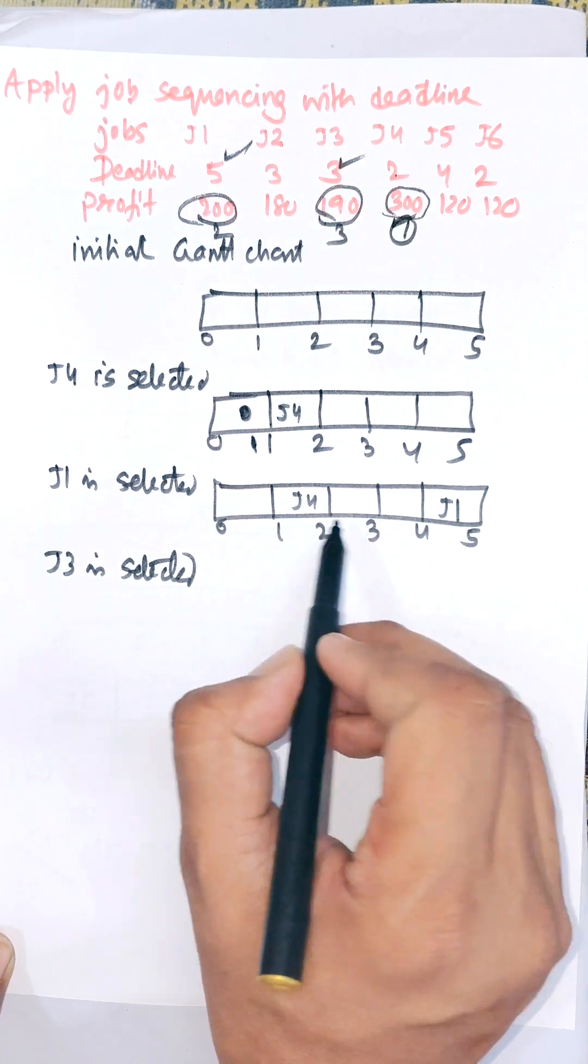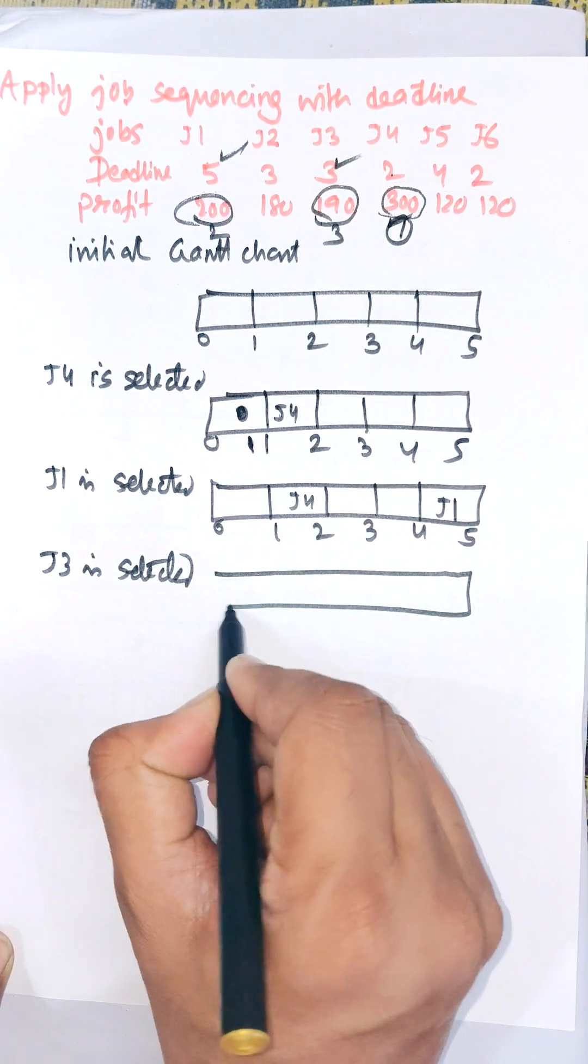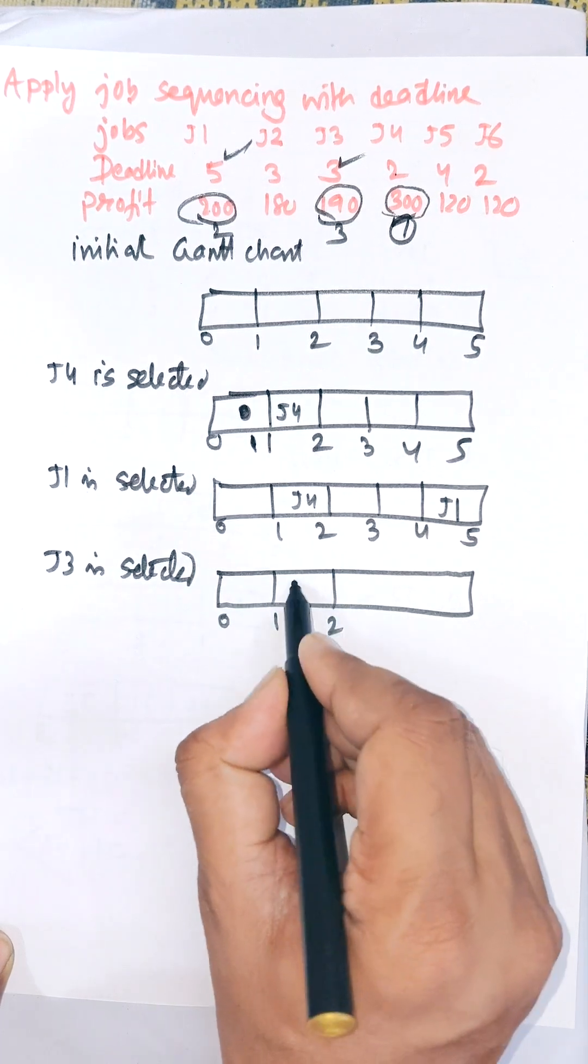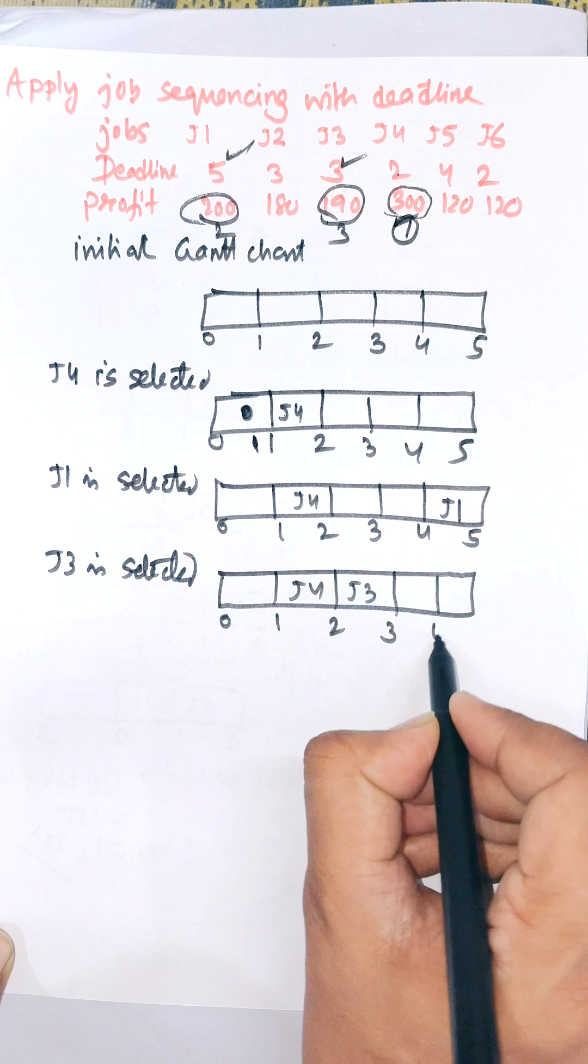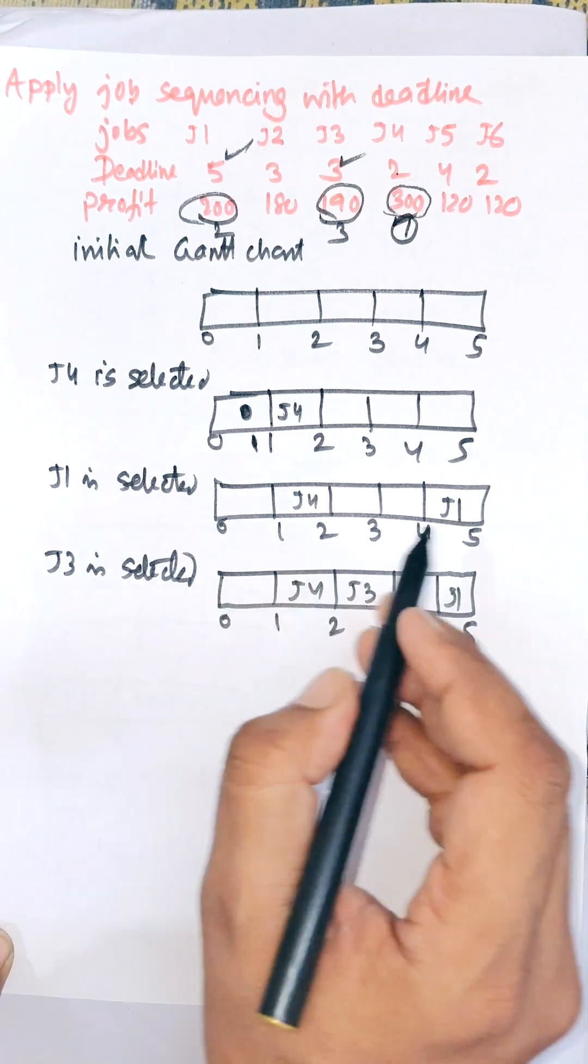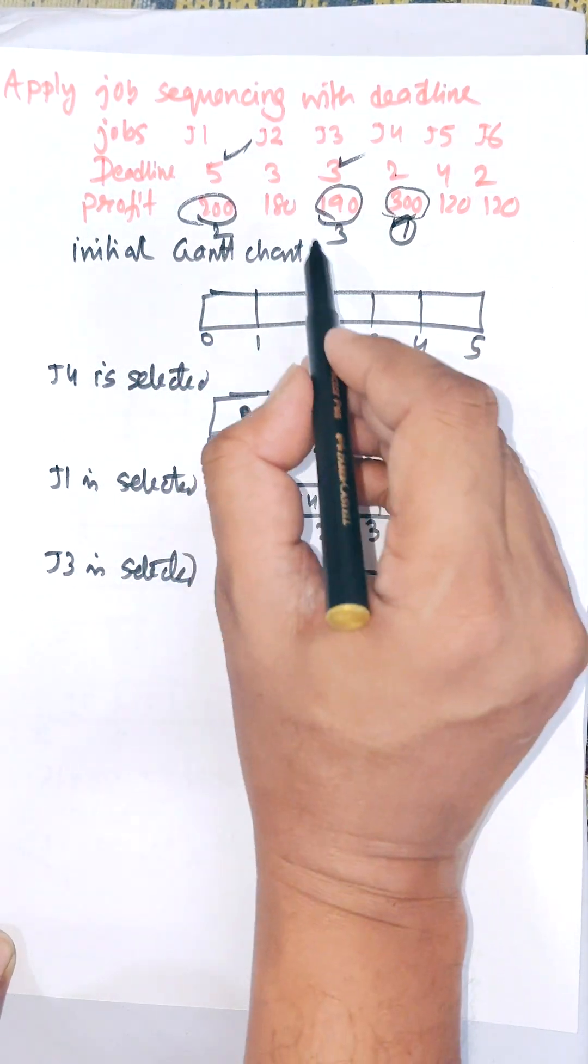So in between 2 and 3, J3 will be allocated: 0 to 1, 1 to 2, 2 to 3 - J3 is allocated. And this one is finally 5. Next one is, that is J3 is selected. Next one is next maximum property is J2.